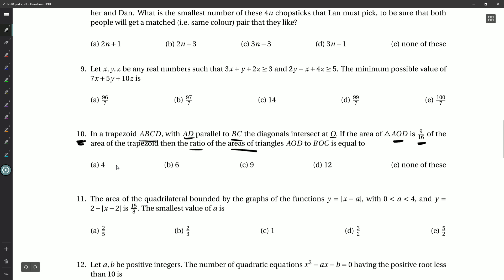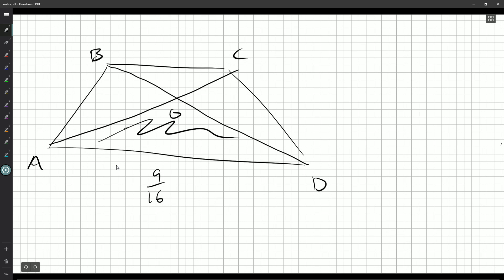Then the ratio of the areas of AOD and BOC is equal to... Oh, okay. So we want to know the ratio of this one and this one. So the 9/16ths... What can we see here? What can we do here?